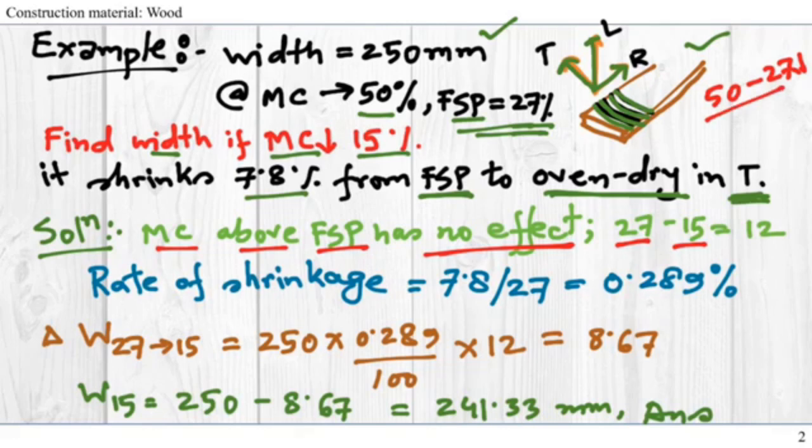After the moisture content drops below 27%, then the shrinkage affects. So we have to only consider 27 minus 15, which is 12%. How do we connect our target, which is finding the width, with the moisture content? Because the moisture content is dropping and it has to affect the width.